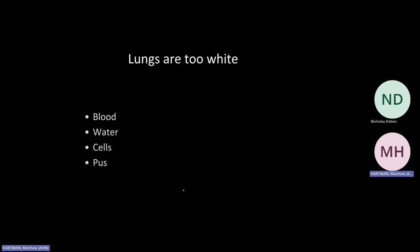This is the first Furmanism: why are the lungs too white on either a radiograph, CT, or whatever? Something is in the lungs taking up space, getting absorbed, making them too white. He drilled this into us as med students: blood, water, cells, pus. Use this when you're reading chest x-rays — blood, water, cells, pus. That's the first Furmanism.